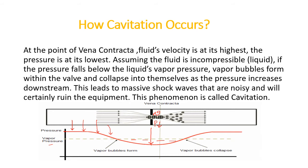At constant temperature, when the pressure of the liquid becomes less than the vapor pressure at this point, bubble formation occurs. The bubbles form in this fashion. When the pressure recovers or increases above the vapor pressure again downstream, these bubbles collapse. This formation of bubbles and then their collapsing leads to massive shockwaves that are noisy and will certainly ruin the equipment. This phenomenon is called cavitation.